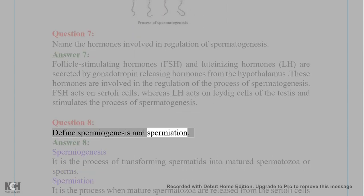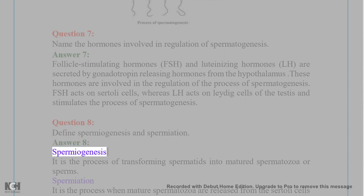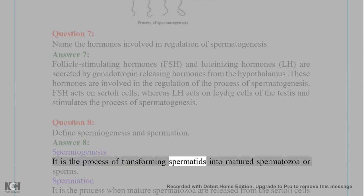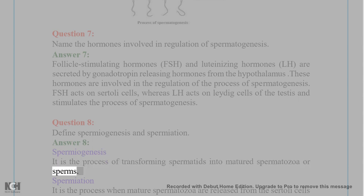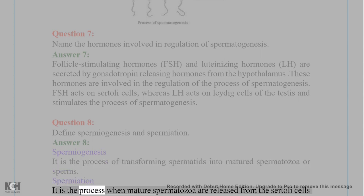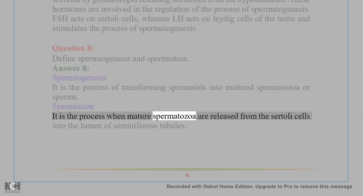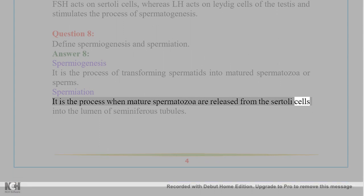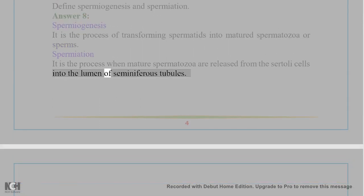Question 8: Define spermiogenesis and spermiation. Answer 8: Spermiogenesis is the process of transforming spermatids into matured spermatozoa or sperms. Spermiation is the process when matured spermatozoa are released from the Sertoli cells into the lumen of seminiferous tubules.